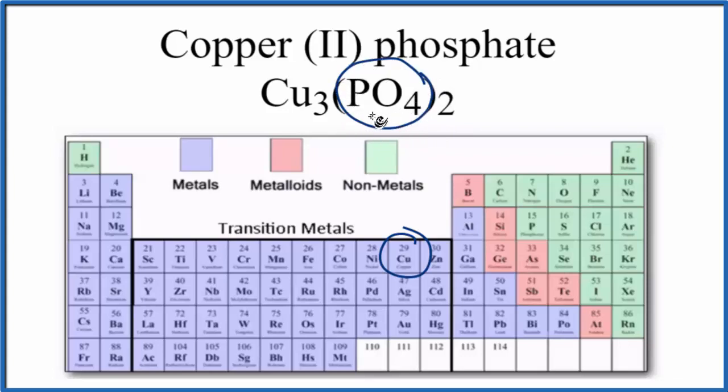And the whole phosphate ion here, each one has a charge of 3-. This is a good one to remember. So we have two 3-es, that should give us 6-. That means copper has to be 2+. Three times 2+, that gives us 6+, and that will cancel out, give us a net charge of 0.